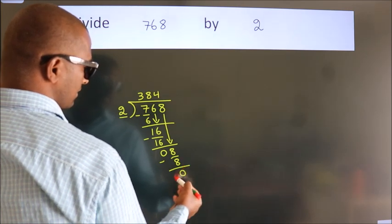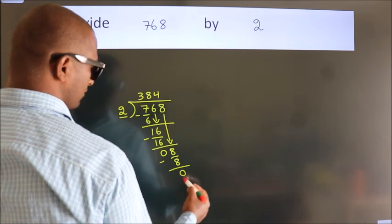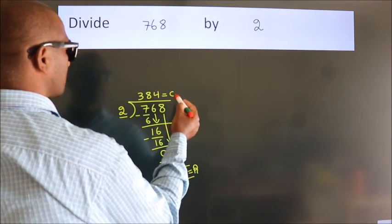After this, no more numbers to bring down. So we stop here. This is our remainder. This is our quotient.